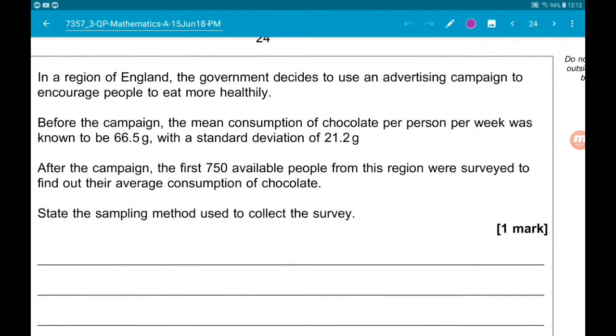Okay, question 18, the grand finale. So in a region of England, the government decided to use an advertising campaign to encourage people to eat more healthily. Before the campaign, the mean consumption of chocolate per person per week was known to be 66.5 grams with a standard deviation of 21.2 grams.